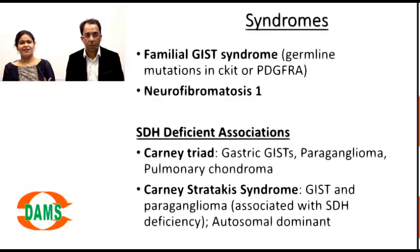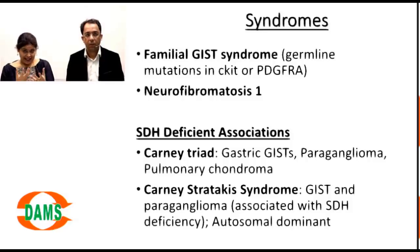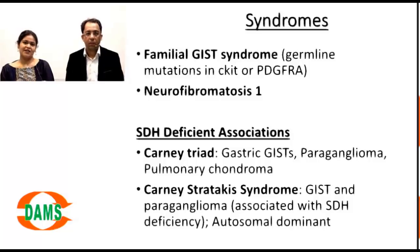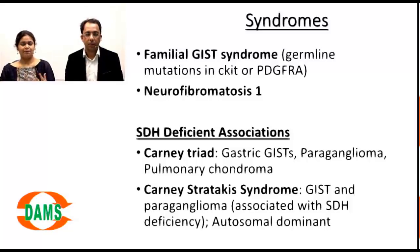There are important syndromes associated with GIST. Germline mutations in c-kit or PDGFRA cause familial GIST syndromes; because these are c-kit germline mutations, conditions like mastocytosis may also occur. An association with neurofibromatosis type 1 exists. SDH-deficient gastric GISTs are linked to Carney's triad — which comprises GIST, paragangliomas, and pulmonary chondroma — a classic exam question about its components.